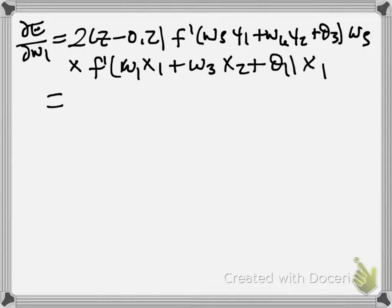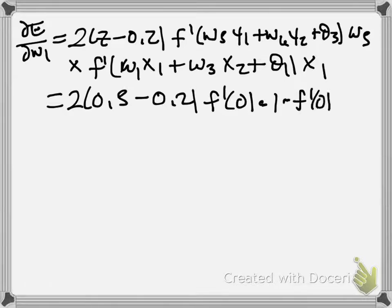Which, this whole thing is equal to 2 times 0.5 minus 0.2, F prime of 0 times 1, right? That's W5 times F prime of 0 times 1. Because this is 1, this is 1, this whole argument is 0 here, this whole argument is 0. What's F prime of 0? It's just going to be 1 over 1 plus 1 squared, so that's a fourth.